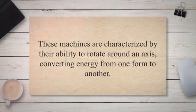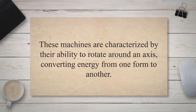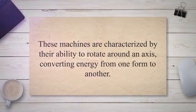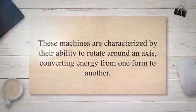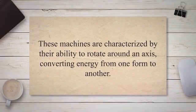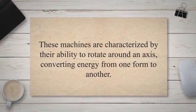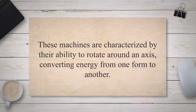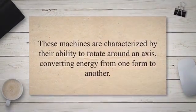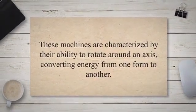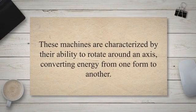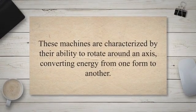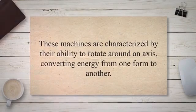Rotating equipment in the oil and gas industry is the machinery that has at least one moving component. They use kinetic energy to move fluids, gases, and other commodities from the inlet to the outlet. Rotating equipment refers to a class of machinery that operates by using rotational motion to perform various tasks, characterized by the ability to rotate around an axis, converting energy from one form to another.